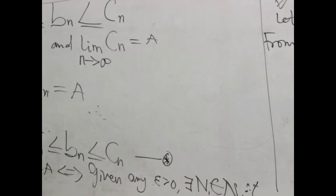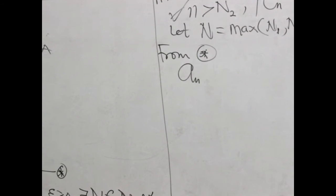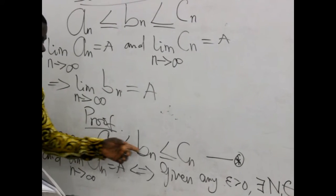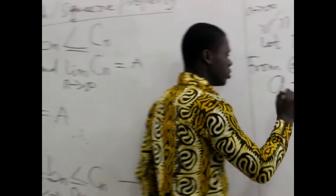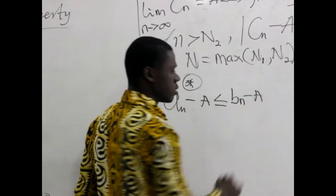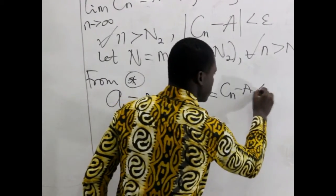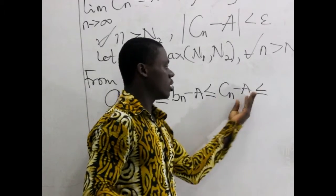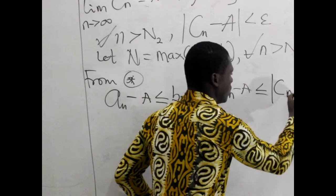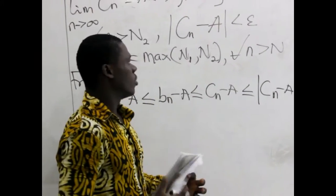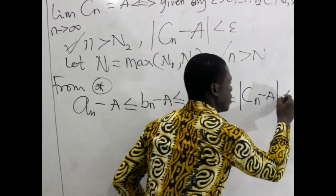From star, we want to do something interesting. We realize that we have this particular sequence. Now if I decide to subtract the same quantity from each of them, the inequality will still hold. So we have the first sequence minus a, less than or equal to the second sequence minus a, less than or equal to the next one minus a. From this definition, we realize that this is less than epsilon, so it is appropriate to conclude that this is also less than epsilon.